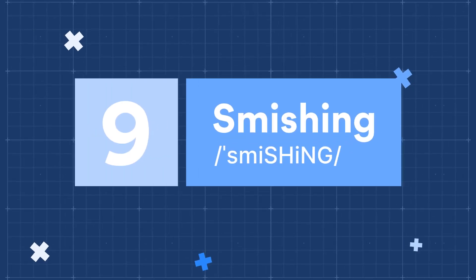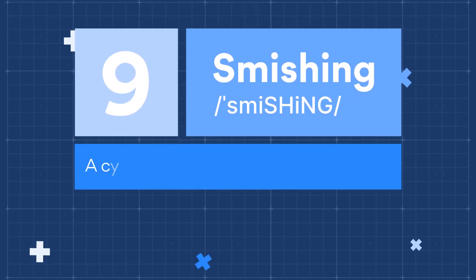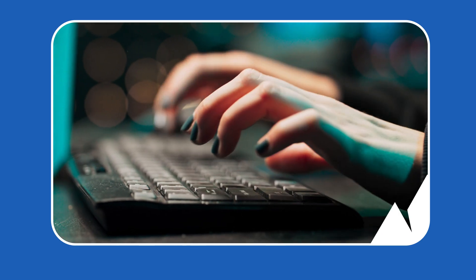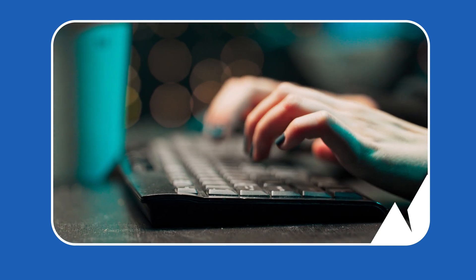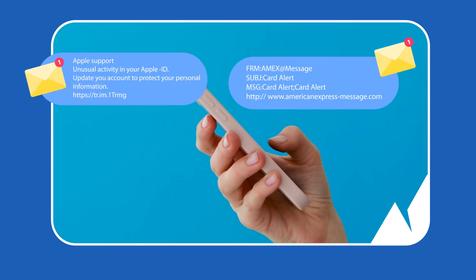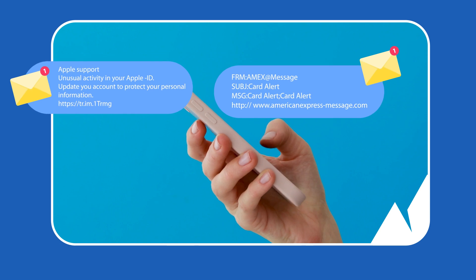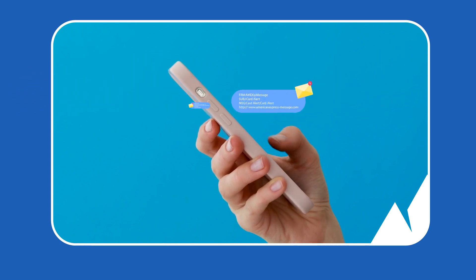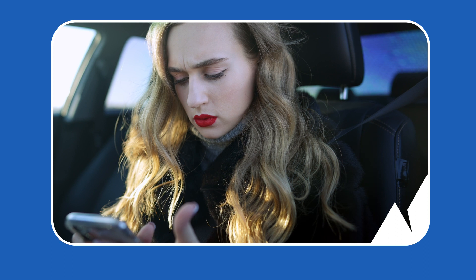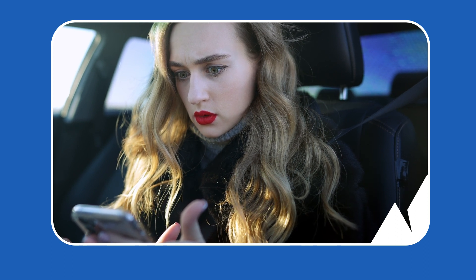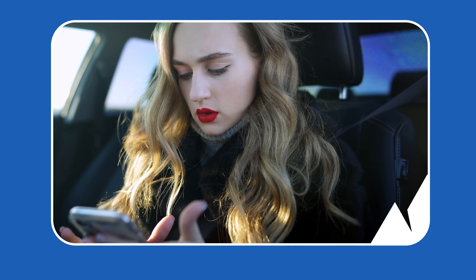Number 9: Smishing. Smishing is a cyber attack that is carried out over text messages. Smishing is a variant of phishing, where cyber criminals send out fake texts to convince their victim that it's from someone they know or trust, like a bank or a government agency. Usually, the goal is to steal money or get the person to install malware on their device to enable further attacks.